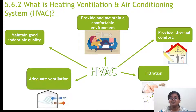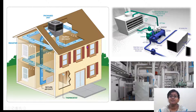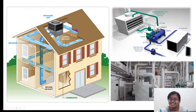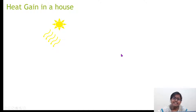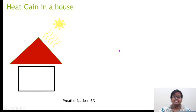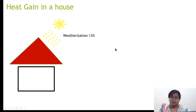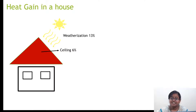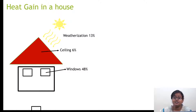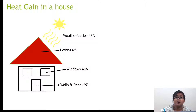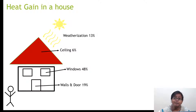This is what an HVAC system looks like — you might have seen these ducts throughout buildings. The heat gain in a house can come from many sources. Weatherization impacts 13% of heat gain; the roof and ceiling contribute 6%; windows contribute 48%; walls and doors contribute 19%; and human activities and people residing inside the house contribute about 14% of heat gain in a room.